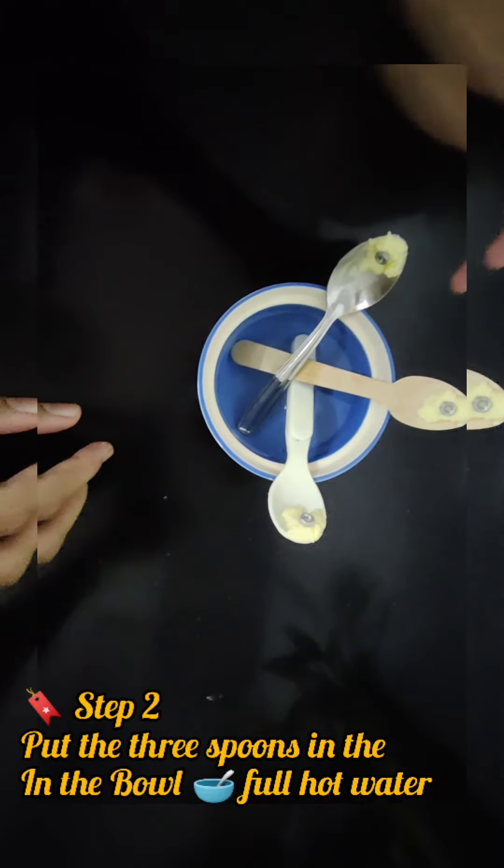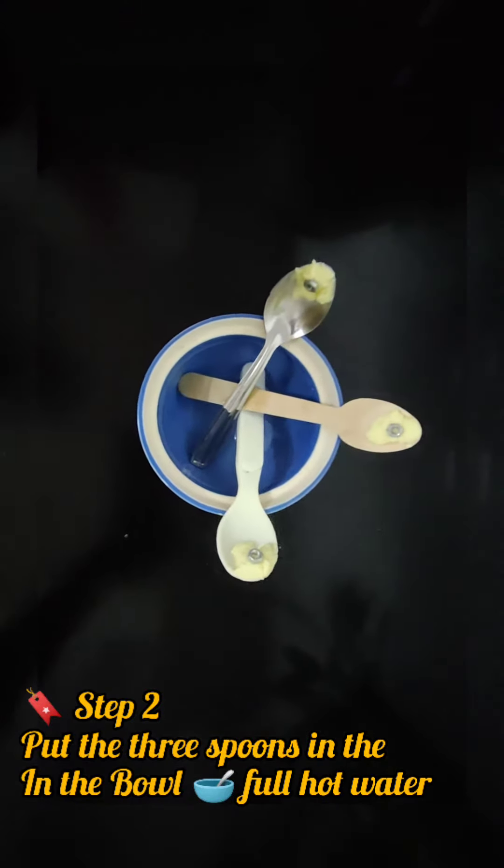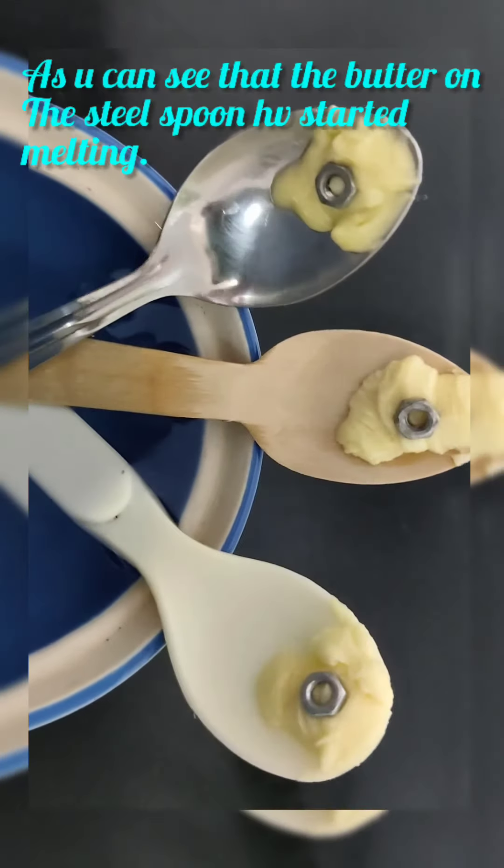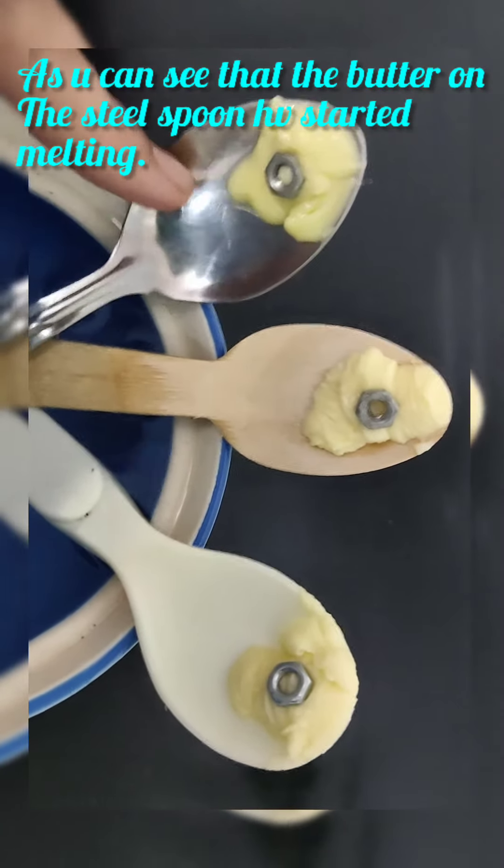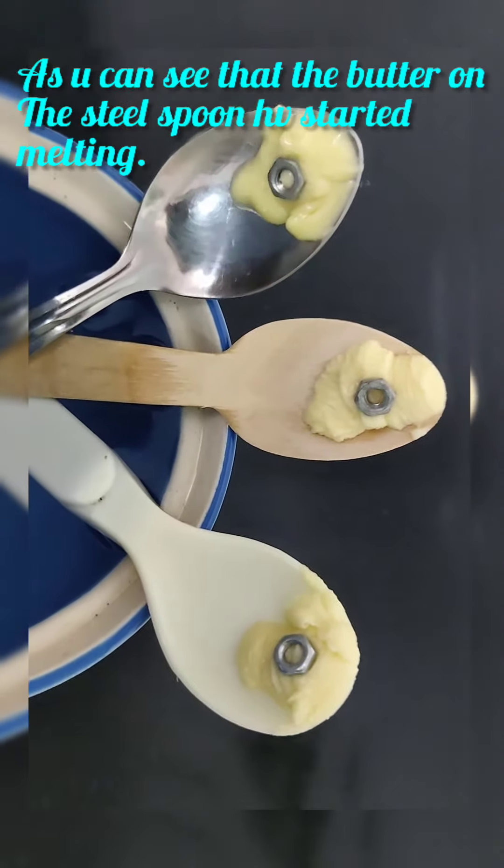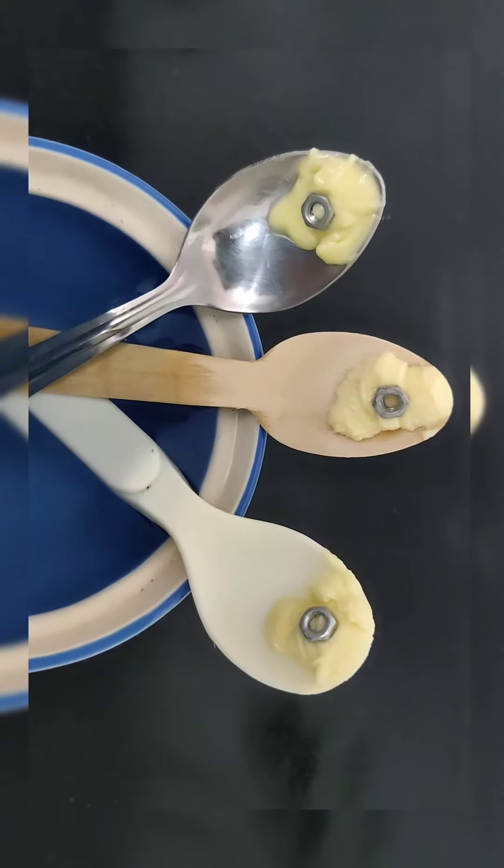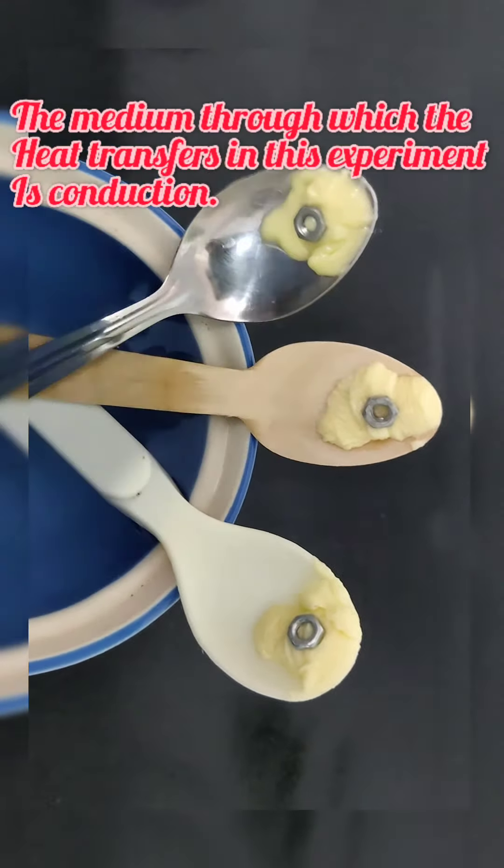Now we will wait for a few minutes and observe what happens. As you can see, the butter on the steel spoon has started melting whereas the butter on plastic and wooden spoons remains the same.